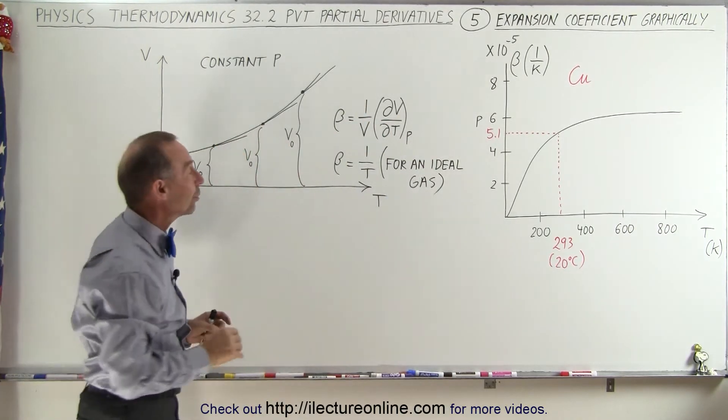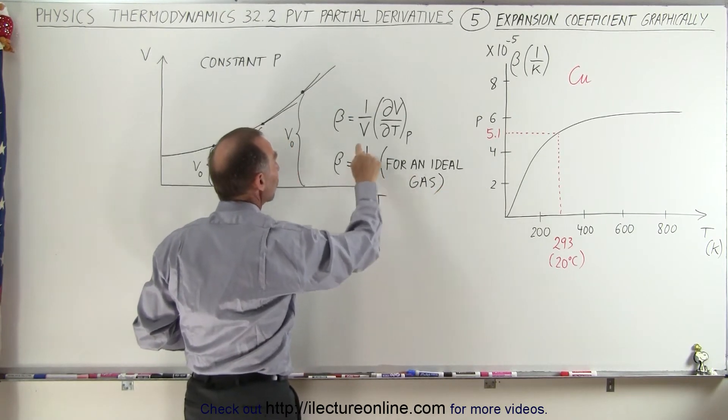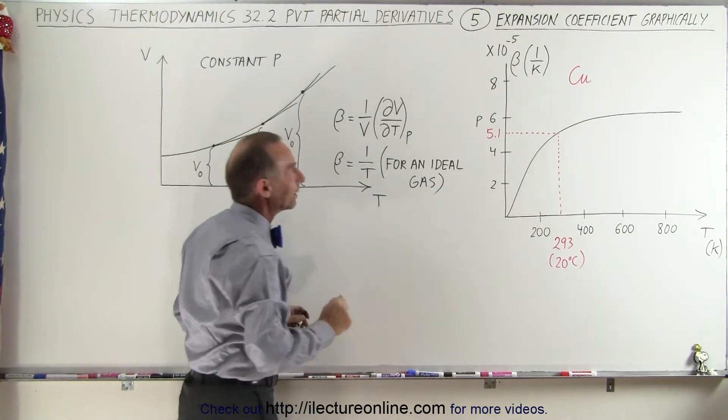And as we saw in previous videos, if we use the ideal gas equation, then we can reduce that to 1 over T for an ideal gas.